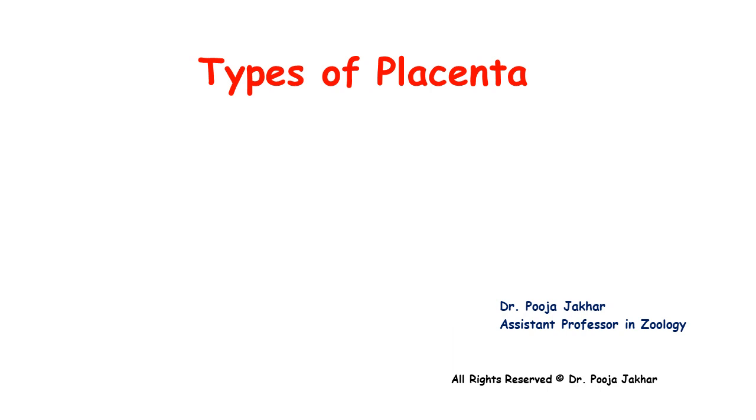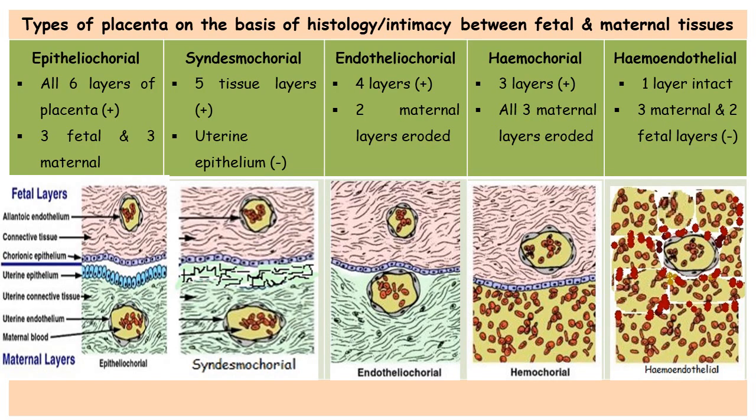Today we are going to learn about the various types of placenta found in class Mammalia. Various types of placentas have been observed in class Mammalia depending upon the nature of the fetal membranes involved in the formation of placenta, on the basis of degree of intimacy between the fetal and maternal tissues, and on the basis of distribution of villi and shapes of the various kinds of placenta.